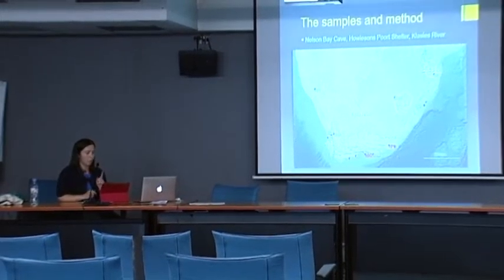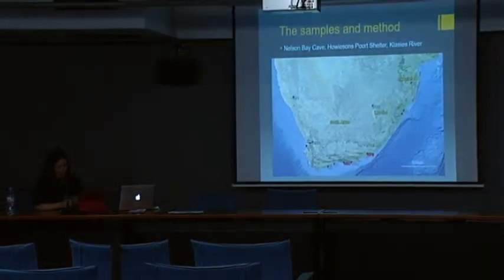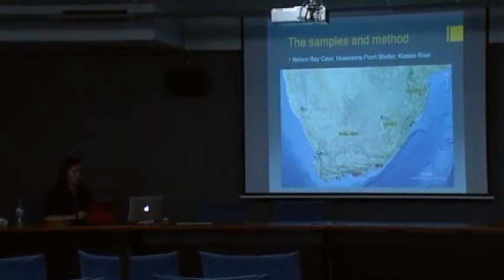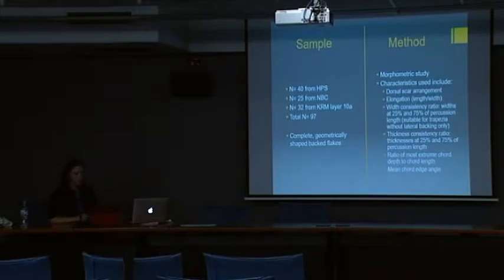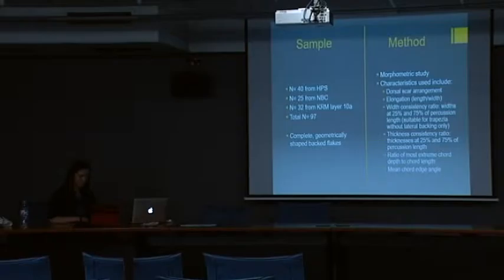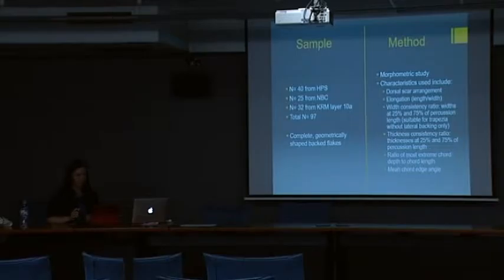The assemblages I've been looking at were Howison's Port Shelter and Nelson Bay Cave, and I also had the chance to look at backed artefacts from one layer at Klasies East before the Iziko Museum closed for renovations. All of these sites are clustered in the Eastern Cape region. For this analysis, I've pulled the backed artefacts from all three sites together, so I won't be discussing inter-site or chronological variability. I also looked only at complete backed artefacts to avoid biasing the sample, and excluded any backed artefacts which were not geometric in plan shape.